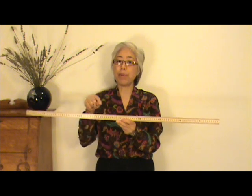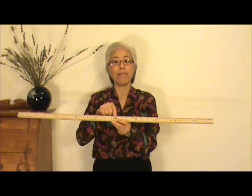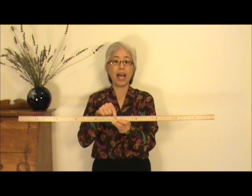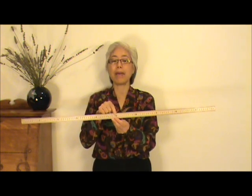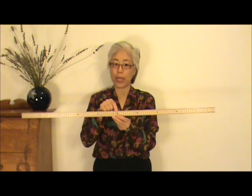If the meter stick is perfectly uniform, the center of gravity would be at the 50 cm marking. The center of gravity and the center of mass are virtually at the same location.